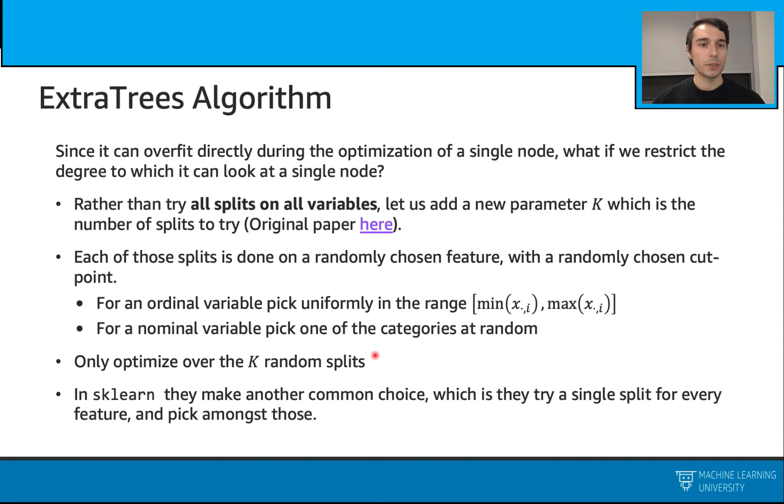In this total number, we will select our features randomly, and we will also select our cut points randomly. And overall, we will only optimize over these k random splits.